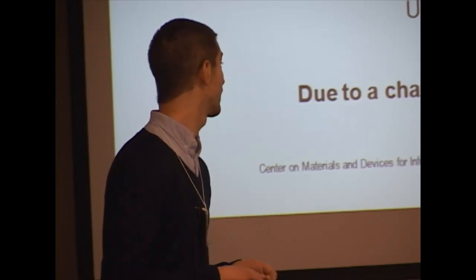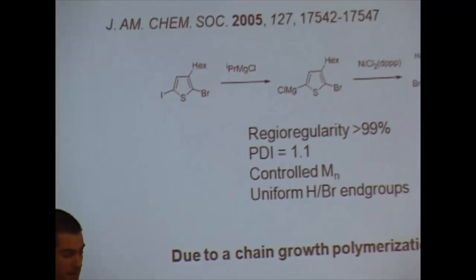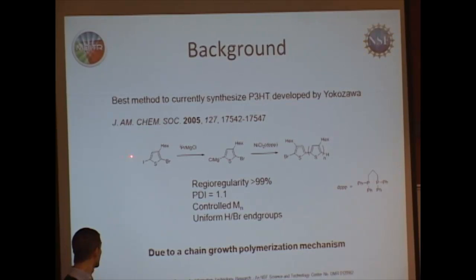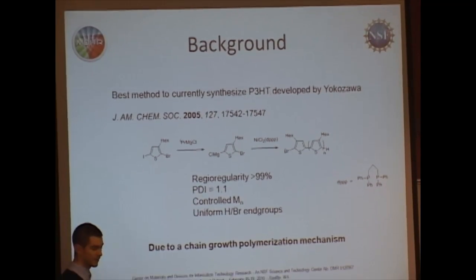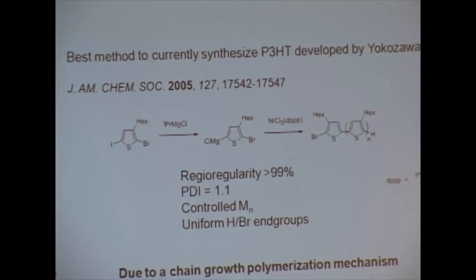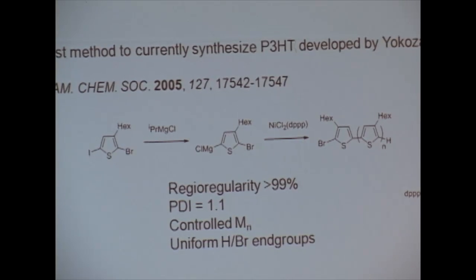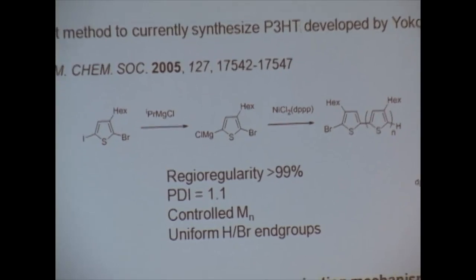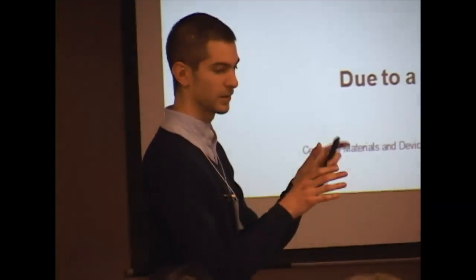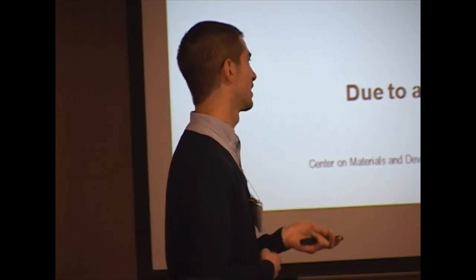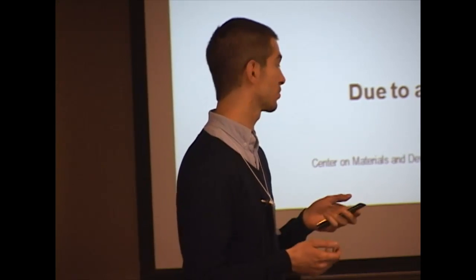We didn't invent this synthesis, but the best available synthesis to make P3HT was developed by Yokozawa about five years ago. He took a bromo-iodo-hexyl-thiophene unit and activated it with isopropyl magnesium chloride to make a Grignard monomer. When you add the nickel catalyst — nickel chloride DPPP, and the DPPP ligand structure is very important, without it the reaction doesn't work well — you can make P3HT with incredibly high regioregularity, very low PDI, and controlled chain length depending on nickel loading. The end groups are uniformly HBr.